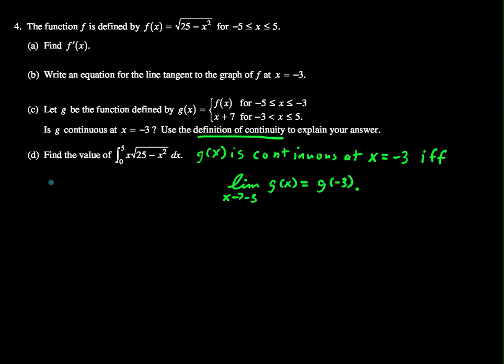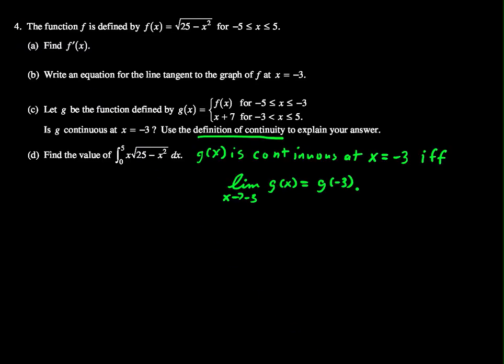All right, part d. Find the value of the definite integral from 0 to 5 of x times the square root of 25 minus x squared dx. Not too bad of a problem, so let me write this down. We want to find the definite integral from 0 to 5 of x√(25 - x²) dx.